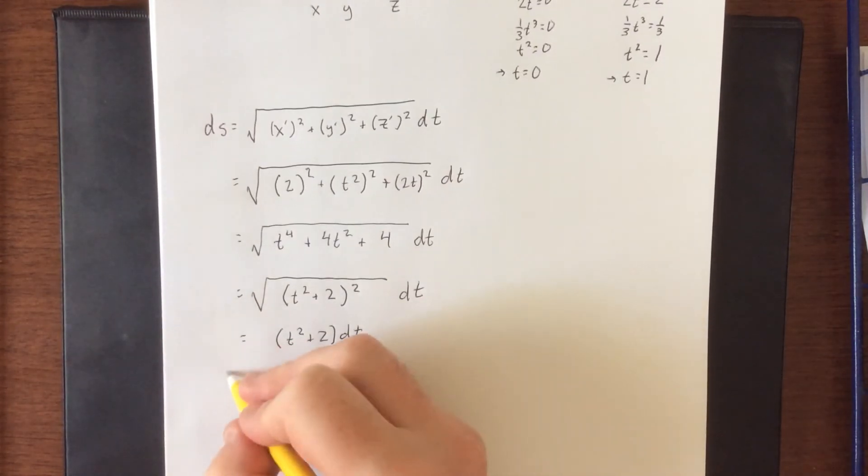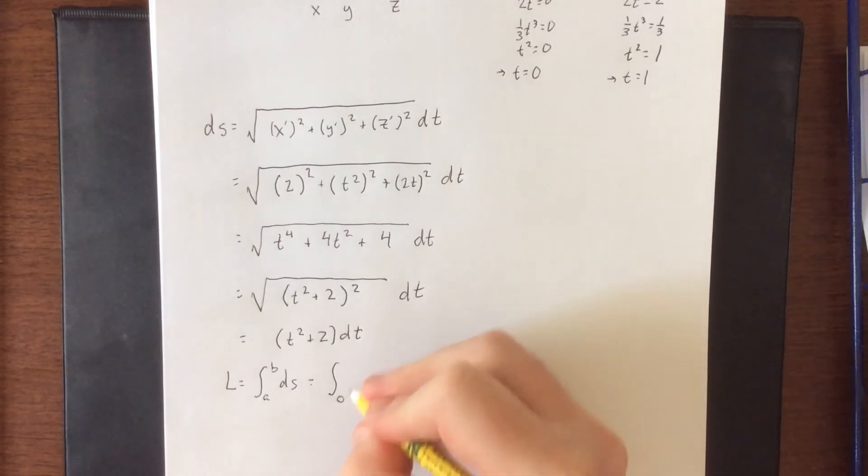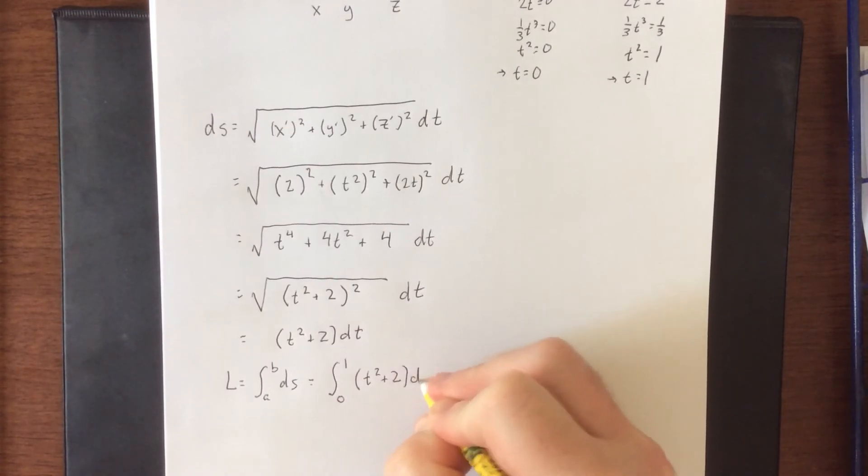So with that in mind, our arc length is going to be equal to the definite integral from a to b of the expression that we just created. Those limits of integration that we found back here are from 0 to 1 of t squared plus 2 times dt.